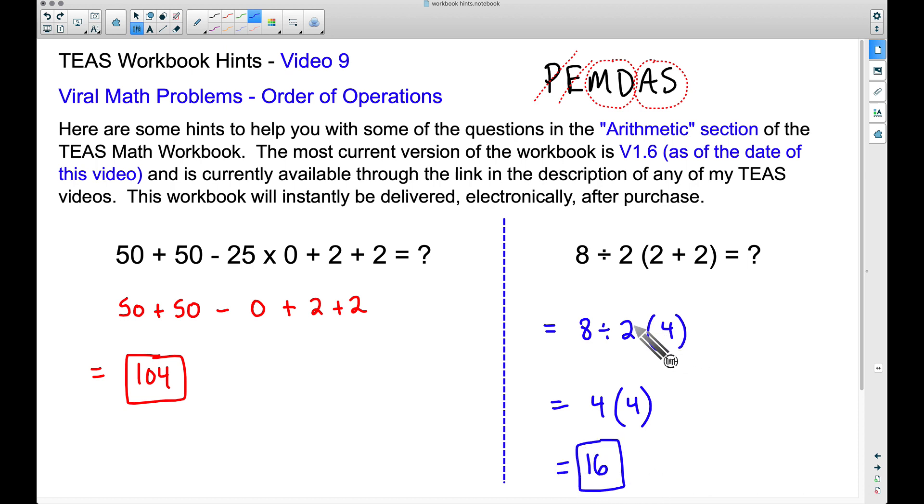And again, that mistake here: if you took 2 × 4 first, you would have got 8 right here, and 8 ÷ 8 gives you 1. But that is not the correct answer to this problem. And the moral of the story is this: when you have multiplication and division in a problem, you do whichever one of these comes first from left to right, and that same concept applies for addition and subtraction as well.